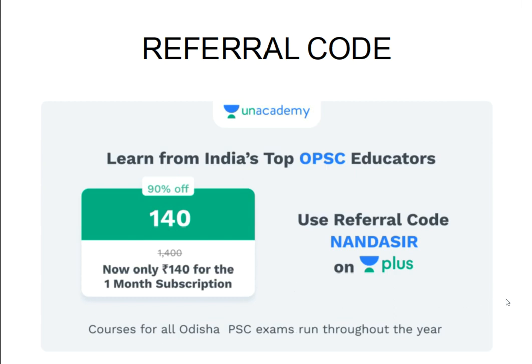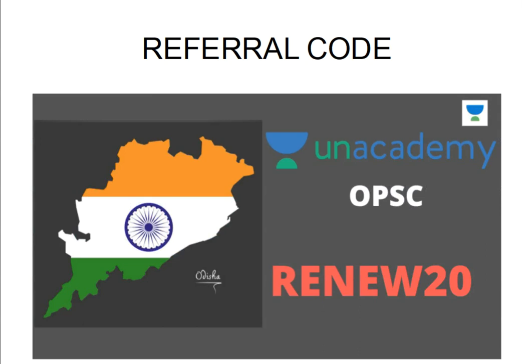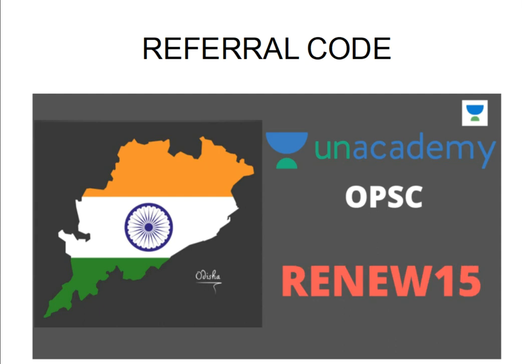For those who have already joined last month or this month and now want to take a six-month, one-year, or two-year subscription, you need to renew using special codes. The first renewal code is RENEW20 — for students with at least 20 days of subscription left — giving a 20% discount on longer courses. Those with at least 15 days left can use RENEW15 for a 15% discount on longer courses.